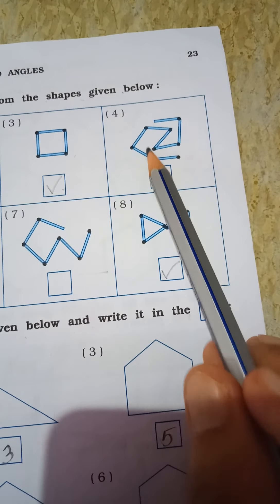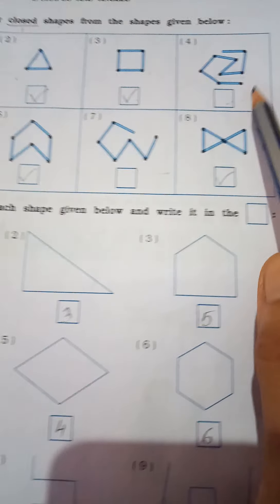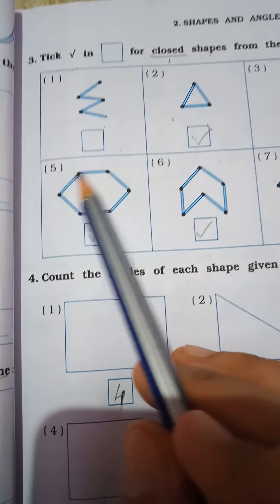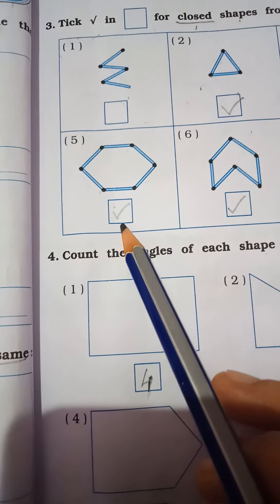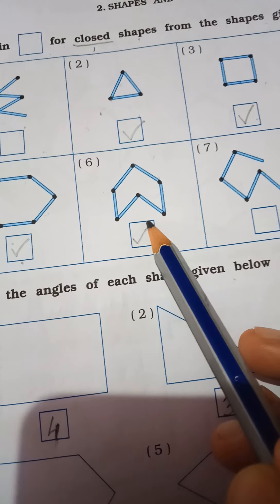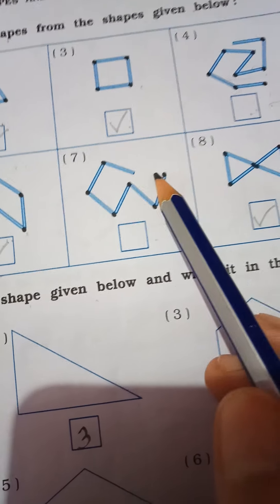This one, this is not. This is open shape. So you can't tick here. Just leave this box. Five number, this is also closed shape. Bandh jagya chai ban chai. This is closed, so we have to tick here. Sixth one, sixth shape also closed from everywhere. So you have to tick here.